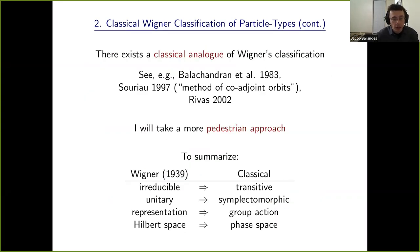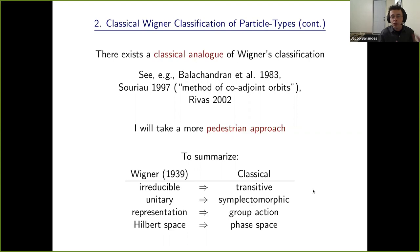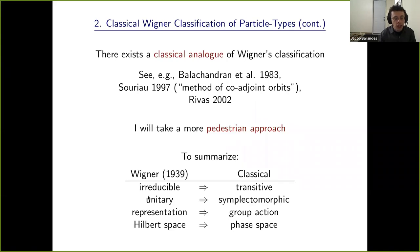There's a classical analog of that picture — known as the method of coadjoint orbits. I'll take a more pedestrian approach. To summarize in words: we take the terms characterizing the Wigner quantum approach and replace them with classical counterparts. 'Irreducible' becomes 'transitive' — same meaning, that we can get from any state to any other through group transformations. 'Unitary' becomes 'symplectomorphic' — a fancy way of saying it preserves the symplectic form used to characterize Hamiltonian dynamics. 'Representation' becomes 'group action,' since here groups act on phase spaces rather than vector spaces.